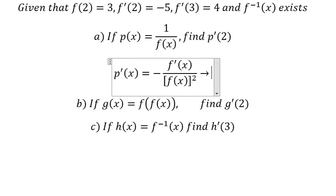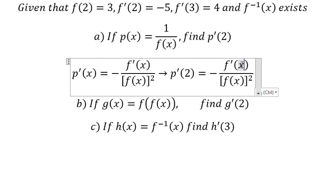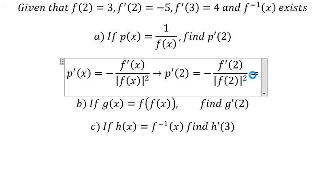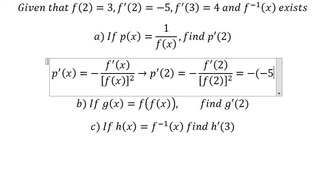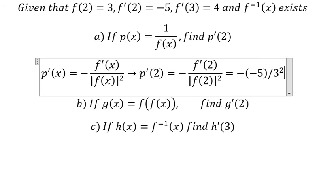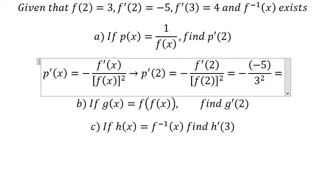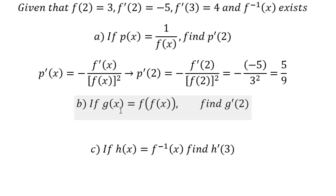So we can put the value of s equals 2 in here. The first derivative of f at number 2 is about negative 5, and f of 2 is about 3. So this is equal to 5 over 9.